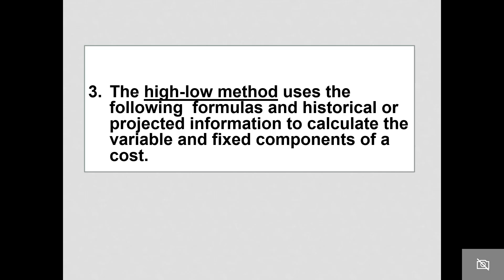The high-low method is the method we're going to use in this class, and it uses historical or projected information to find the variable and fixed components. This method is also called the two-point method.